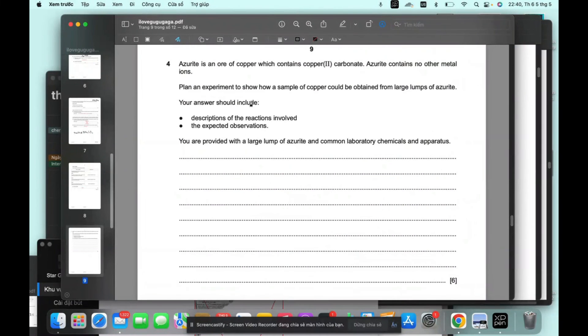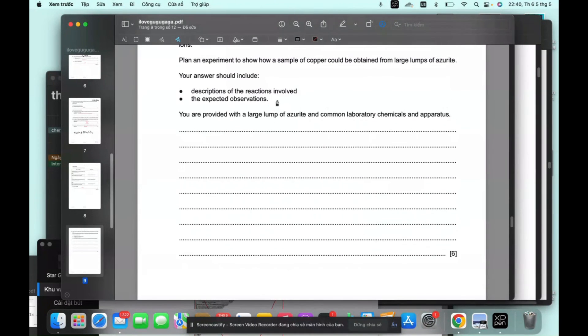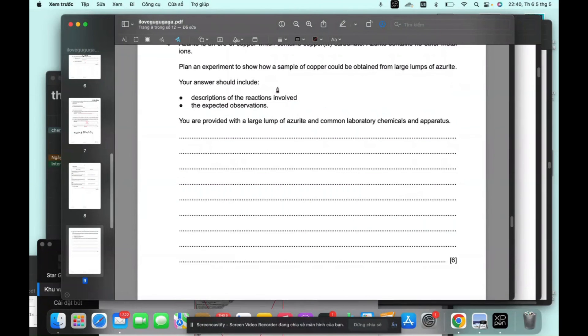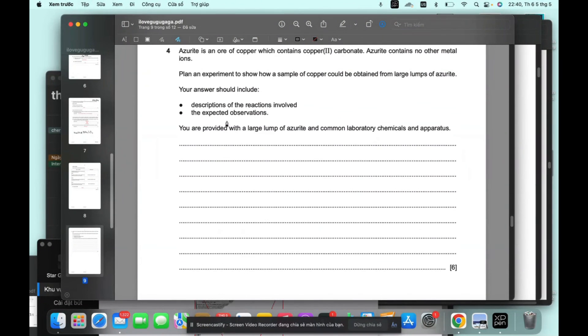Azurite is an ore with copper which contains no uranium. Okay. How to show a sample of how copper would obtain a large lump of azurite. Okay. We provide with large lump of azurite. So we have the apparatus.